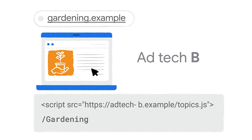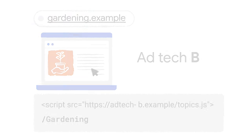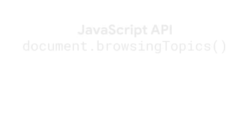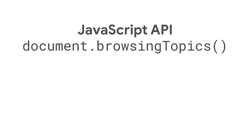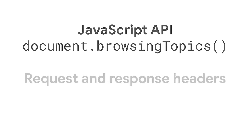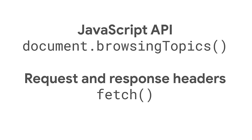The point is that callers should learn no more than they could have using third-party cookies. Topics provides two ways for a caller to observe and access topics — two ways to signify to the browser that they've observed a topic for a user, and two ways to get access to topics that were observed. The caller can either use the Topics JavaScript API, or use Topics request and response headers on a fetch request or for an iframe.